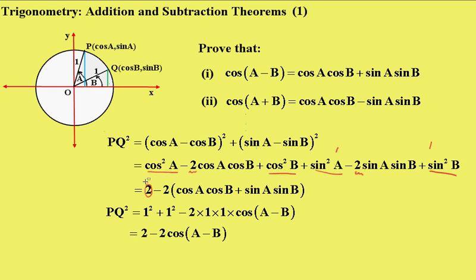Next we'll work out PQ² a different way using the cosine formula. PQ² can be found by saying 1² + 1² = 2 - 2×1×1×cos(angle between), and the angle between is going to be the difference A - B. A - B will give you that little angle there in the triangle POQ.